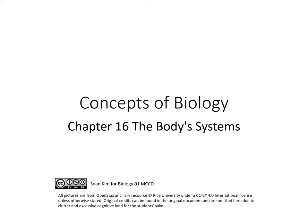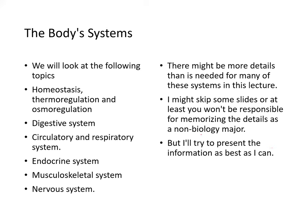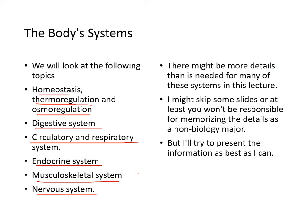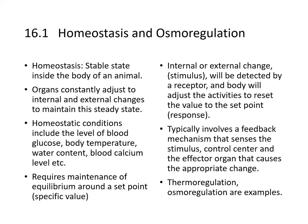We'll be discussing chapter 16, body systems. This chapter is really quite problematic because it should really be broken up into at least six different chapters. We'll be discussing homeostasis, thermoregulation, and osmoregulation, the digestive system, circulatory and respiratory system, endocrine system, musculoskeletal system, and nervous system. There might be more details here than is needed, so I might skip some of the slides.